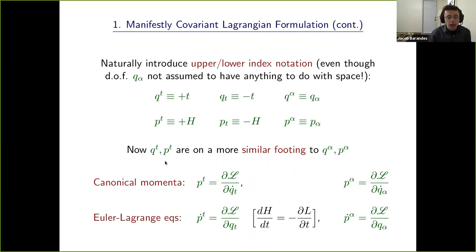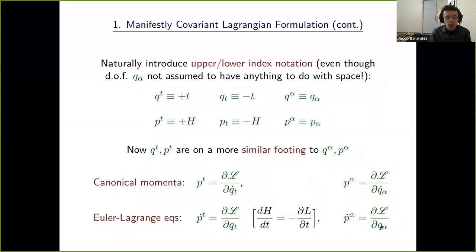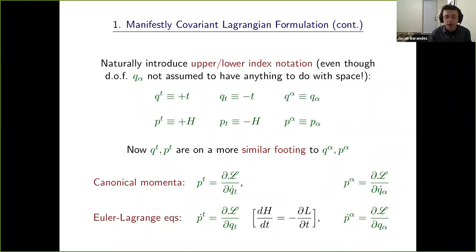We now treat t as an extra degree of freedom with its own canonical momentum, computed as dL/d(t-dot), and the canonical momentum we get is minus the Hamiltonian. It's natural to introduce an upper and lower index notation, with upper-indexed plus and lower-indexed minus for time-indexed quantities. With this formulation, the time degree of freedom Q^t and its canonical momentum are on much more similar footing to our other degrees of freedom. The additional Euler-Lagrange equation from the time degree of freedom just expresses that the total time derivative of the Hamiltonian equals minus the partial derivative of the Lagrangian with respect to time — i.e., Hamiltonian conservation when there's no explicit time dependence.